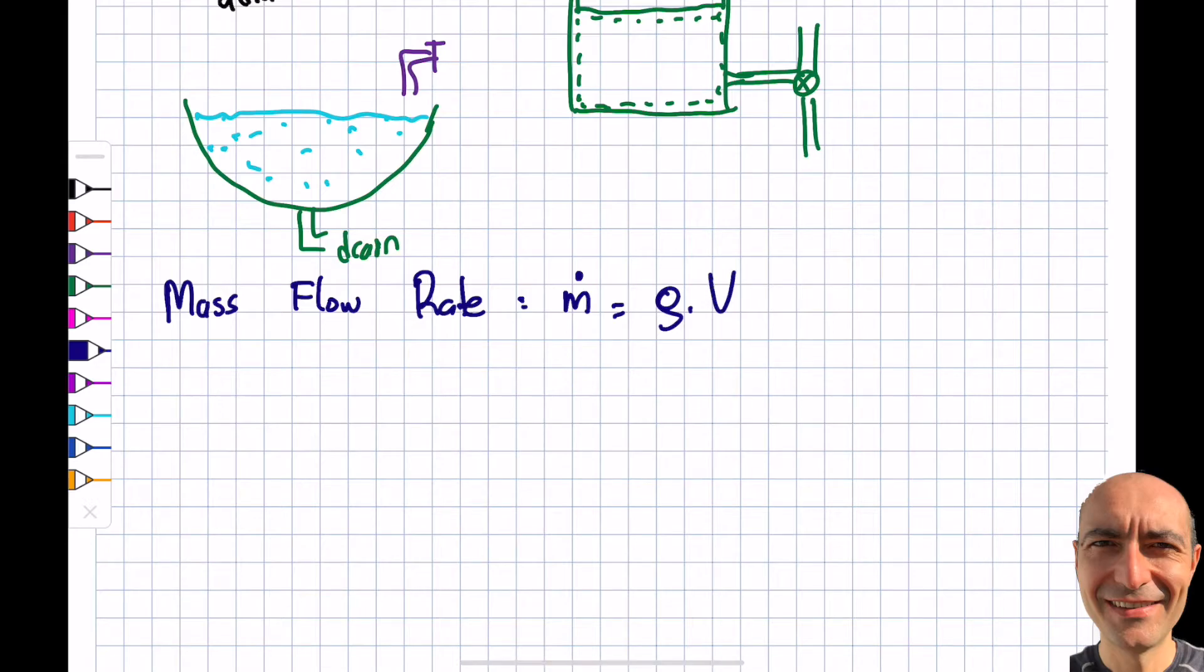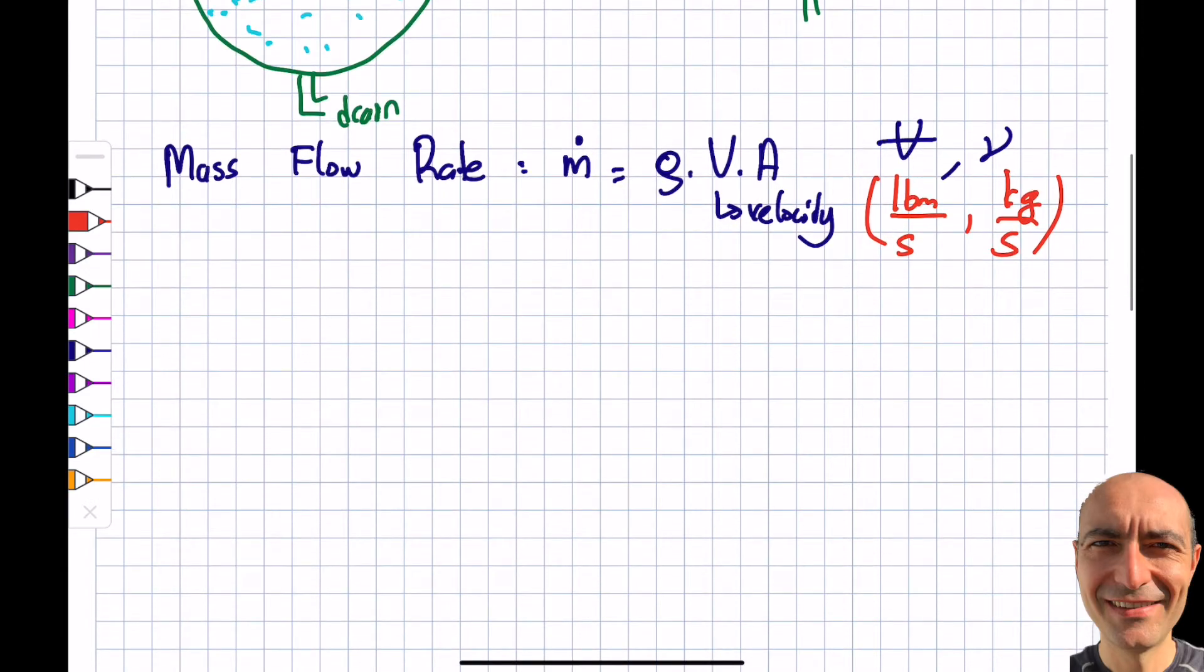Mass flow rate: this is m dot, which equals ρ (density) times V (velocity) times A (area). One last time, this is volume for me, this is specific volume, this is velocity - the way I write it. You don't have to do it this way, I'm just telling you what I do. The unit of it is pound mass per second - it's the mass per second, how much mass is flowing per second at a given cross-section. In SI it's kilogram per second.